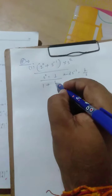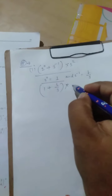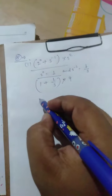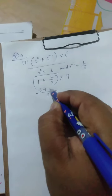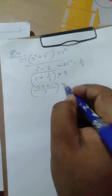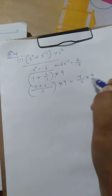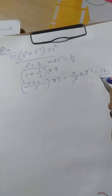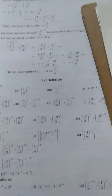So we have 1 plus 1 upon 3, multiplied by 9. We take the LCM of 3 and 1 into 9, which gives us 4 upon 3 into 9 — simplifying, 3 cancels to give 12. So 12 is the answer of this question. Now look at the second part of this question.